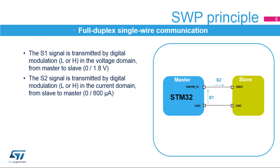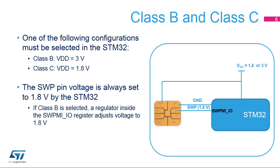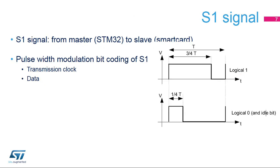The SWP is full-duplex on a single wire thanks to the following principle. The S1 signal is transmitted in the voltage domain from master to slave. The S2 signal is transmitted in the current domain from slave to master. The supply voltage class must be selected in the STM32 during software initialization. A dedicated 1.8-volt regulator inside the STM32 SWPMI I/O is used to adjust the SWP voltage if VDD is 3 volts. The S1 signal is transmitted by the STM32, the master, to the smart card, the slave. A duty cycle of 25% on S1 codes a logical 0 and an idle bit.